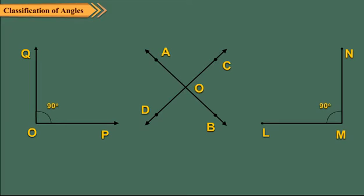Similarly, lines AB and CD intersect each other at O forming an angle of 90 degrees. So line AB and CD are perpendicular to each other.